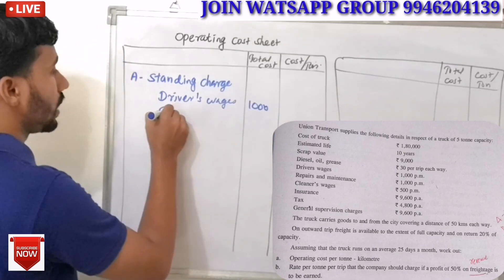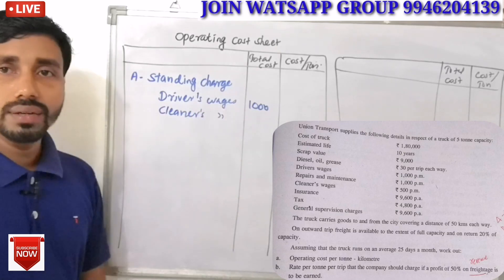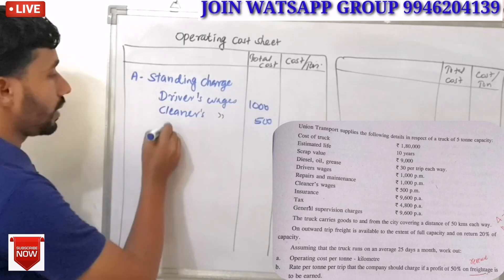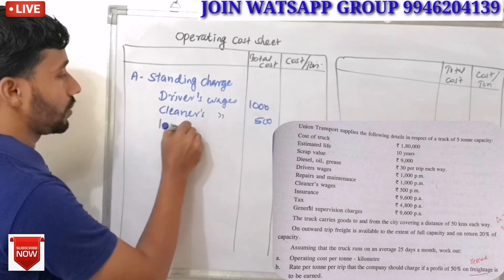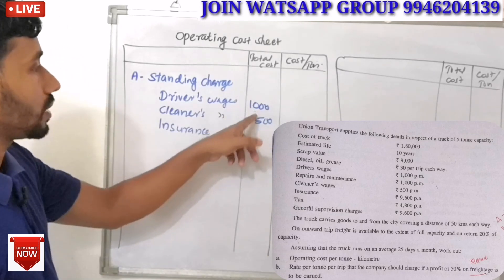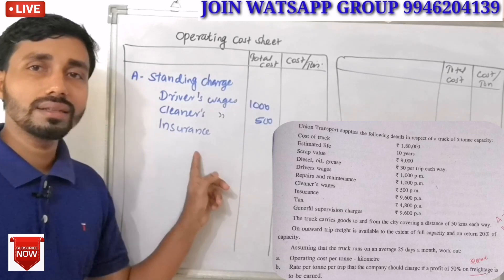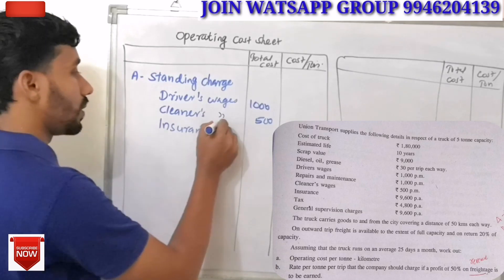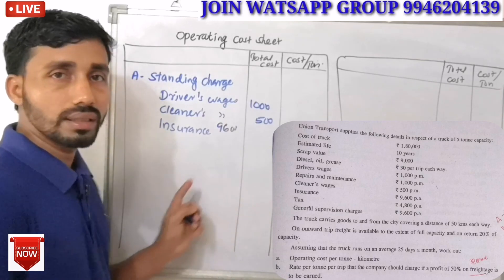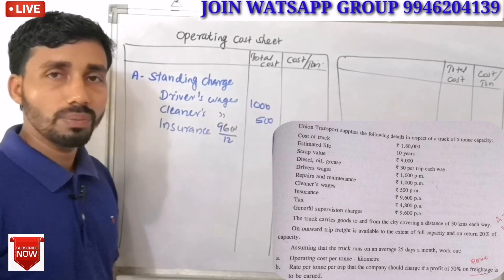The next item is cleaner's wages. Cleaner's wages are fixed charges at 500. The next one is insurance. Insurance is a fixed charge. Since insurance is given per annum, we convert it to monthly. Insurance is 9,600 per annum, so monthly it is 800.